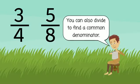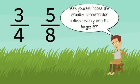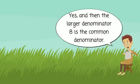You can also divide to find a common denominator. Think of the denominators 4 and 8 in 3-4ths and 5-8ths. Does the smaller denominator 4 divide evenly into the larger 8? Yes. Then the larger denominator 8 is the common denominator.